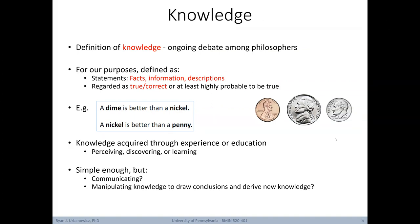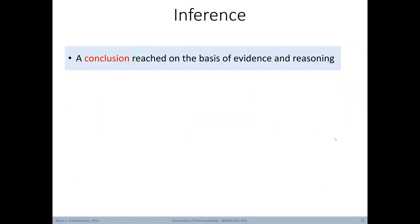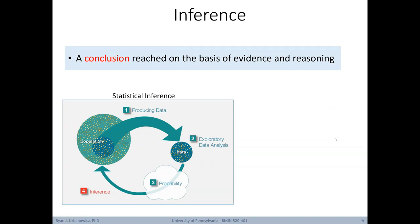How do we go about communicating knowledge effectively, or manipulating knowledge to draw conclusions and derive new knowledge? This is where inference comes into play. Inference is a conclusion reached on the basis of evidence and reasoning. A type of inference you're probably familiar with is statistical inference — when doing research, we collect a data set from a population, analyze and explore it, and use it to model and make predictions about the population. These are inferences: we grab a sample and try to make inferences about the larger population, though there's some probability of error since we're not looking at the entire population.